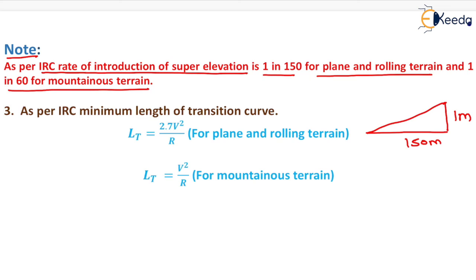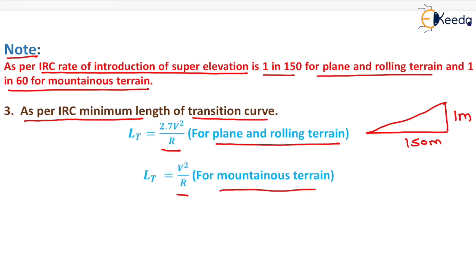The third criteria is as per IRC minimum length of transition curve: LT = 2.7V²/R for plain and rolling terrain, and LT = V²/R for mountainous terrain. We have now calculated the length of transition curve as per all three criteria. That is all about the transition curve.